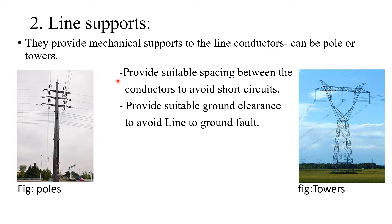The second important component is line supports. As the name suggests, they provide mechanical supports to the transmission lines or line conductors. They can be poles or towers. These line supports will provide suitable spacing between the conductors and they will provide ground clearance to avoid line-to-ground faults.